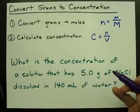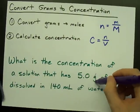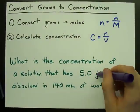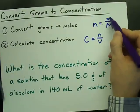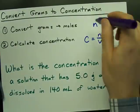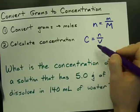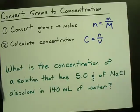To convert from grams to concentration, get the number of moles—mass divided by molar mass—then plug that into C equals n over V. Best of luck.